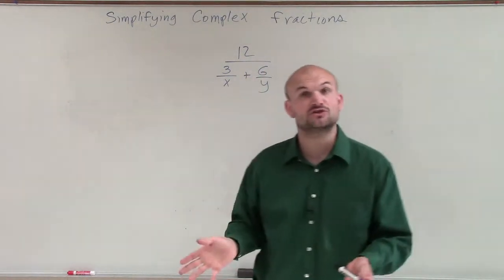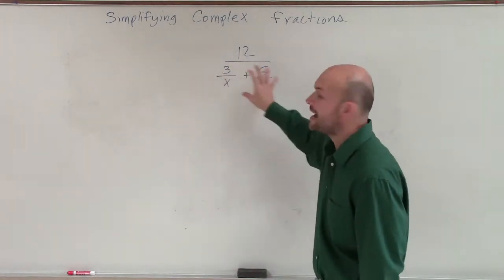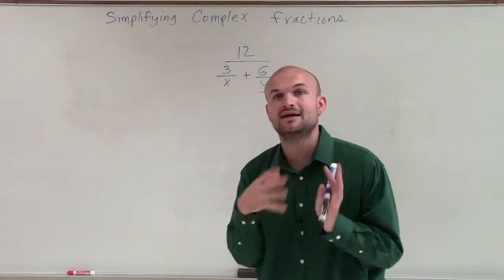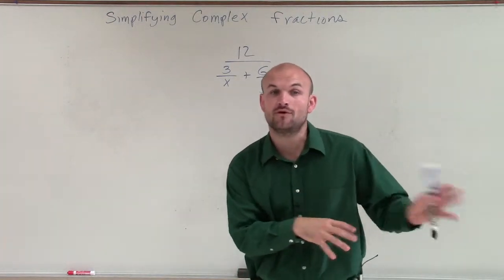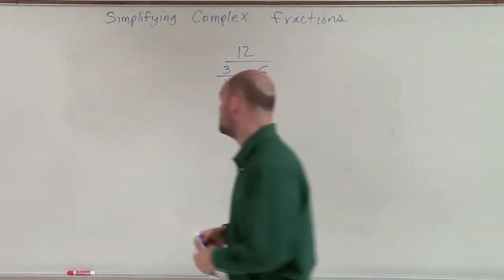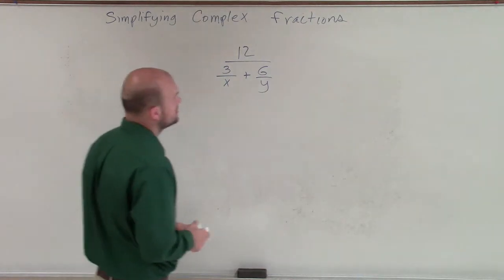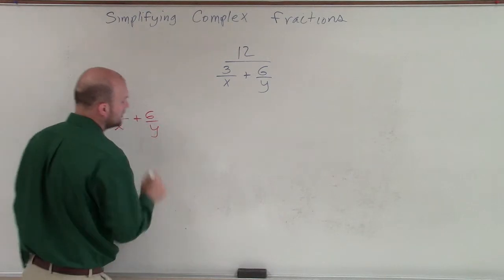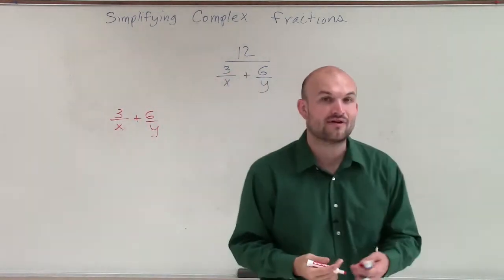Let's just look at our denominator exclusively for the moment. And let's say, all right, I want to create this to one single fraction. Because then once I have it as one single fraction, I can apply the operation we've done before by multiplying by its reciprocal. So what I'll do is just kind of over here on the side, let's combine 3 over x plus 6 over y. So when combining, again, fractions,